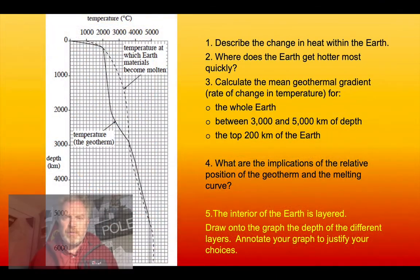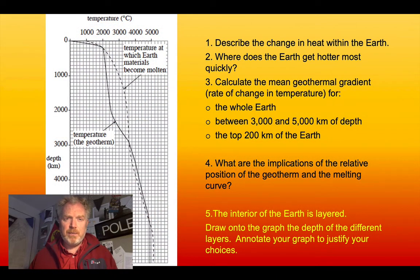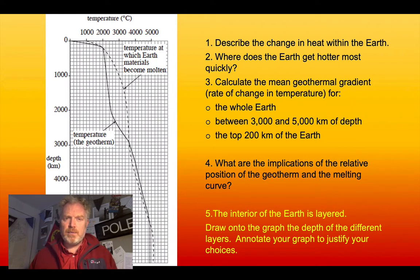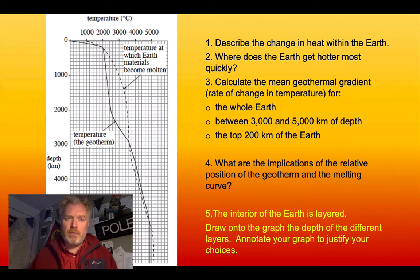Let's have a look at some data to do with this. This is a graph of the geothermal gradient. It also shows us the temperature at which rock material melts, and you'll see that varies with depth — that's because of pressure changes. There's a whole series of questions designed to help you really understand what this graph is showing us.